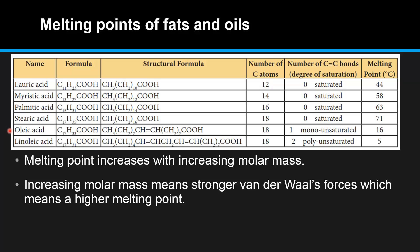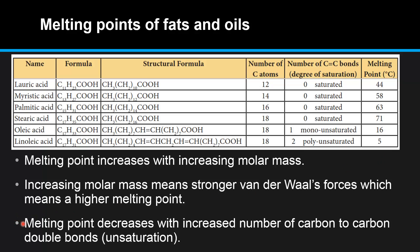If we look at the last two fatty acids in the table, oleic acid and linoleic acid: oleic acid is monounsaturated, meaning it has one carbon to carbon double bond. Linoleic acid is polyunsaturated, which means it has two carbon to carbon double bonds. As the number of carbon to carbon double bonds increases, the melting point decreases. So melting point decreases with increased unsaturation.